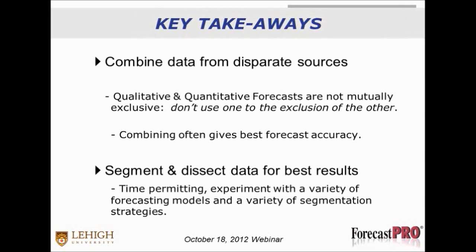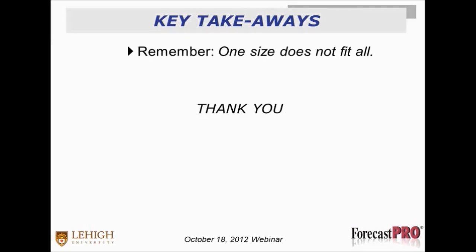A few other takeaways. Combine data from disparate sources — we operate in very complex environments and need to gather information from different sources. The most disparate are qualitative and quantitative forecasts, which are not mutually exclusive. Don't use one to the exclusion of the other, and combining often gives the best forecast accuracy. And last, segment and dissect your data for best results. Time permitting, experiment with a variety of forecasting methods and a variety of segmentation strategies. Play with this on your software package. Remember, one size does not fit all.